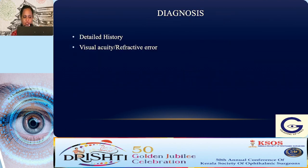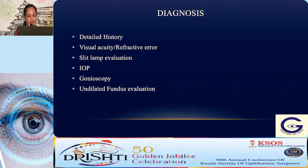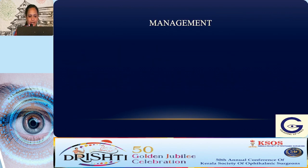For diagnosis, a detailed history is needed, including drug intake, which the patient may not reveal during an acute episode. Visual acuity and refractive error help determine etiology. Then slit lamp evaluation, intraocular pressure, gonioscopy, and undilated fundus examination are performed. Sometimes other tests like UBM or B-scan are needed to confirm diagnosis.